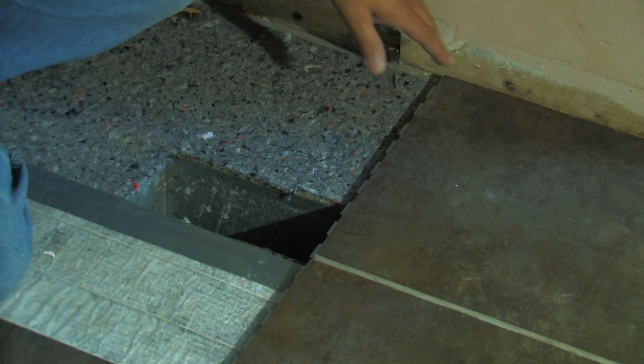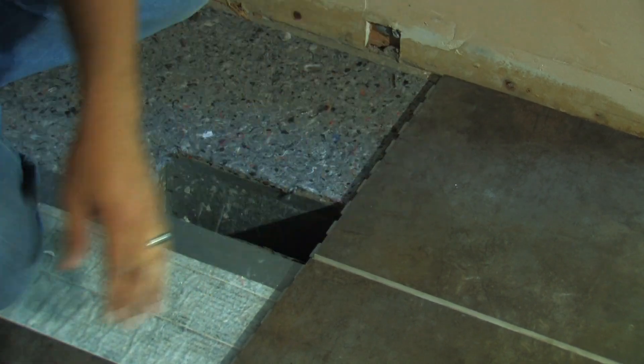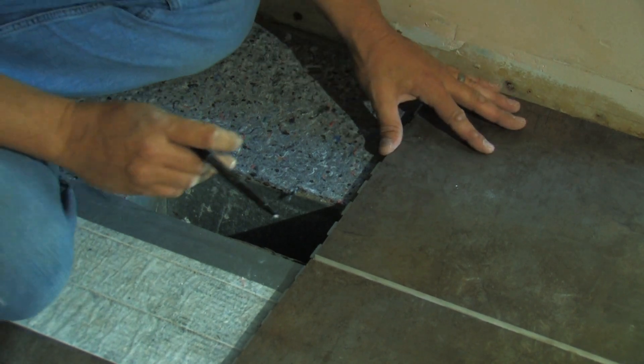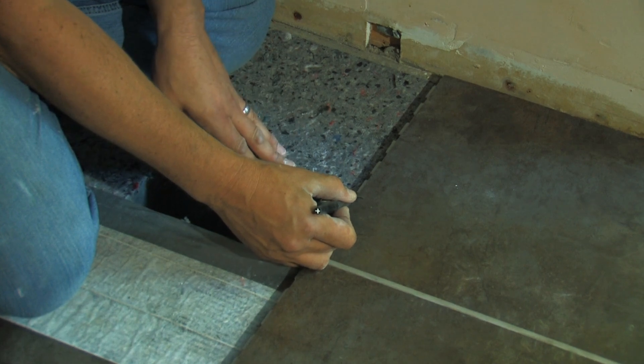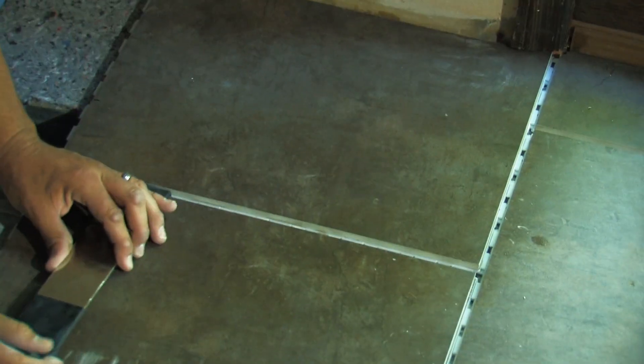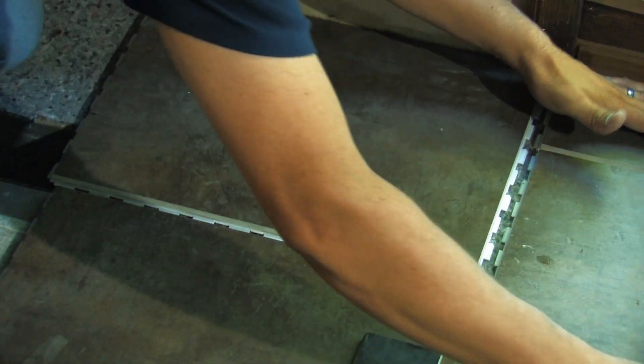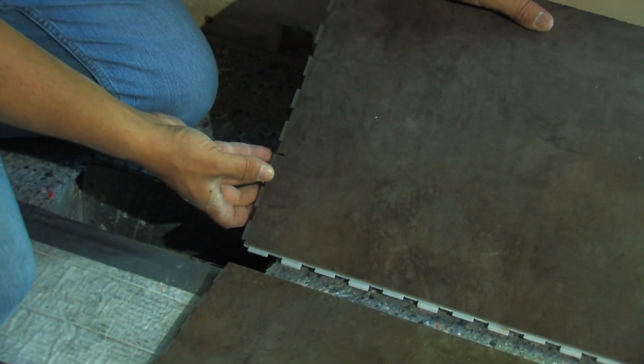All right, here we are at the vent cut. This is a two-angle cut - one coming this way and one coming this way. Your best way to mark that out is to actually put the tile in place. I'm going to mark my spot, that's right where we want our cut to go, and then I'll remove the tile.